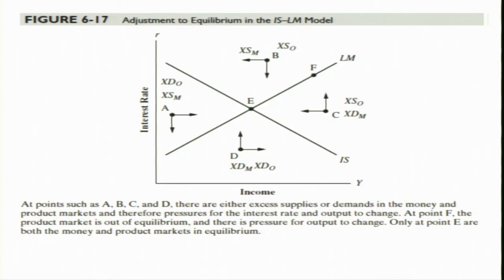Putting everything together in one combined diagram, the equilibrium position is E where both the IS curve and LM curve intersect — both product market and money market are in equilibrium. At any other point, for example point A, looking at the LM schedule, money demand is less than money supply, and to the left of the IS curve, investment is greater than saving. So there will be a downward pressure on rate of interest and an upward horizontal pressure on income to increase, and finally we will be coming to position E.